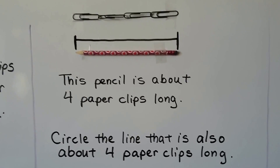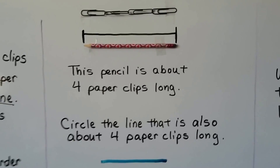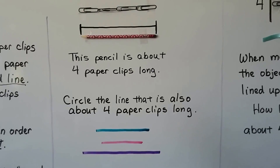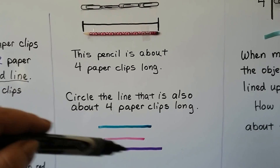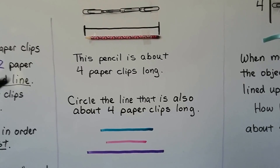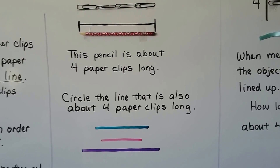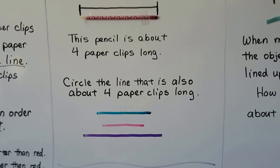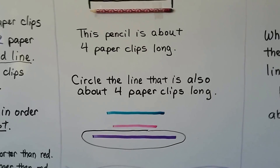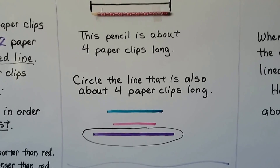Here we have a pencil that is about 4 paperclips long. We need to circle the line that is also about 4 paperclips long. We have a blue line, a pink line, and a purple line. Can you look with your eyes to tell which one is about as long as the pencil? When we line them up, we can see that the bottom one — the purple one — is about the same length as the pencil and the 4 paperclips. We can see that they pretty much line up.